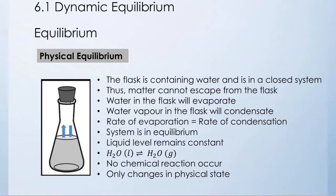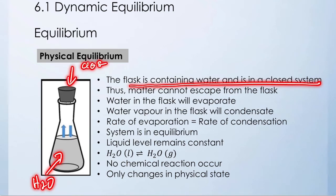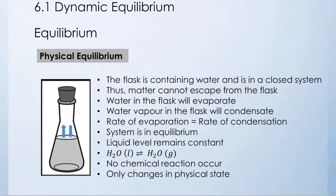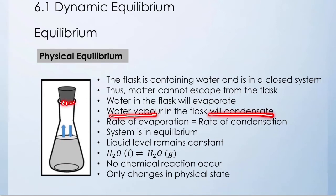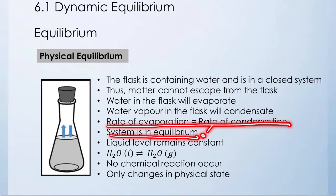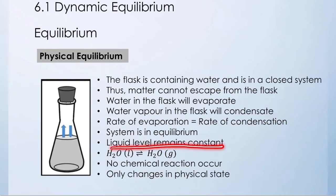Let's look at an example of physical equilibrium. A flask contains water and is in a closed system, so matter cannot escape from the flask. The water in the flask will evaporate, and the water vapor in the flask will condense. Therefore, the rate of evaporation will be equal to the rate of condensation — this is when the system is in equilibrium, and the liquid level remains constant. No chemical reaction occurs because only changes in physical state happen in the flask. In this chapter, we are not interested in physical equilibrium; let's talk about chemical equilibrium.